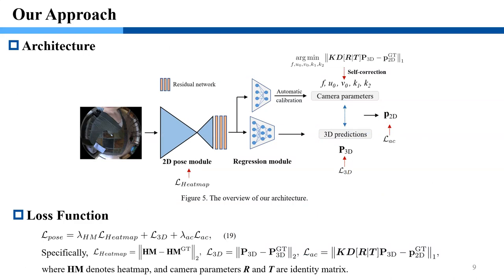Figure 5 shows the overview of our architecture. We first use a 2D pose module to detect 2D pose with heatmap representations. Then, we have two branches. The first branch is an automatic calibration module to predict camera parameters, while the second branch is to estimate 3D pose. Finally, we project 3D pose to 2D pose using estimated camera parameters. Equation 19 is the overall loss function, including heatmap loss, 3D pose loss, and 2D projection loss.